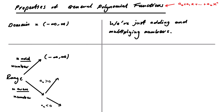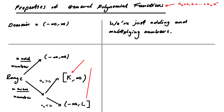If aₙ is greater than zero and the degree is even, it's a bit like a quadratic — the parabola is bounded below but not above — so the range is a closed interval [k, ∞) for some constant k. If aₙ is less than zero, it's like an upside-down parabola, bounded above by some constant L, giving range (-∞, L]. The constants k and L are difficult to calculate in general; we can do it for quadratics using vertex form, but not easily beyond that.